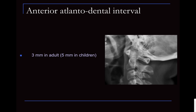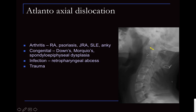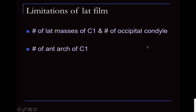Next, we need to look at the craniovertebral junction. The anterior arch of atlas, posterior arch of atlas, and the dens define the anterior atlanto-dental interval. In children, up to 5 millimeters is acceptable, but in adults it should not be more than 2.5 to 3 millimeters. If this is widened, that would suggest atlanto-axial subluxation. This could be due to rheumatoid arthritis, seronegative spondyloarthropathies, congenital conditions like Down syndrome or spondyloepiphyseal dysplasia, infection such as retropharyngeal abscess, or trauma. A limitation of the lateral cervical radiograph is that fractures of the craniovertebral junction and the arch of atlas can be missed, as this region is not very well evaluated on this view.